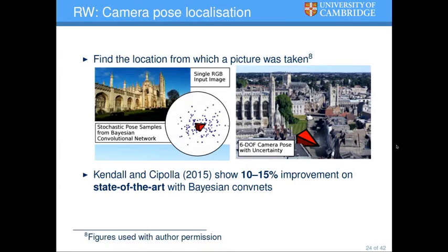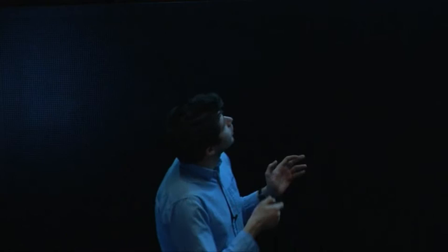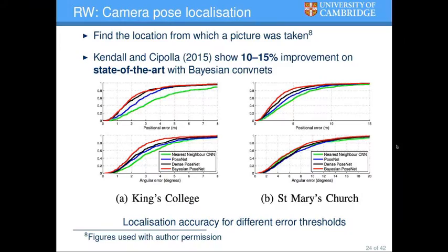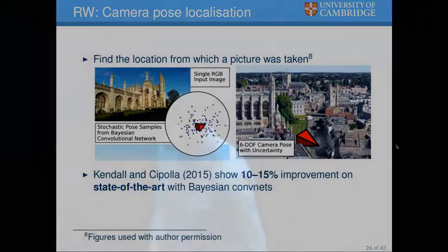Some real-world applications as well. Camera pose localization: given a picture, we need to tell where that picture was taken from. For example, this picture of King's College was taken from this point facing this way. These systems are used in autonomous vehicles for fine-grained localization — GPS gives you 5 to 10 meters precision, while these give 5 to 10 centimeters. Kendall and Cipolla managed to show 10 to 15% improvement using these techniques over the state of the art, and every centimeter counts.